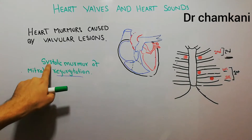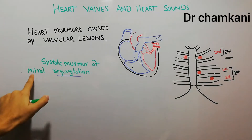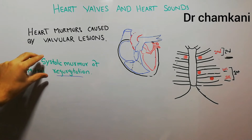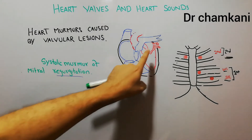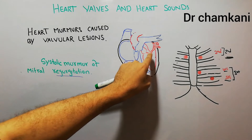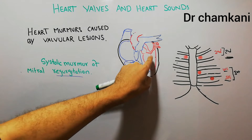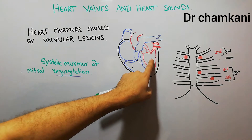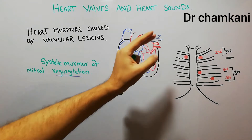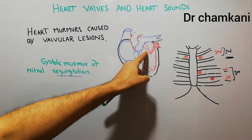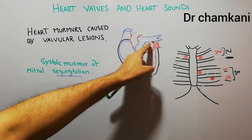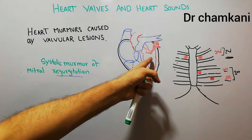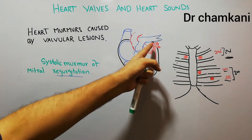Today we are going to talk about the systolic murmur of mitral regurgitation. What is basically mitral regurgitation? In mitral regurgitation, the mitral valve becomes incompetent and it allows the blood to move from the left ventricle into the left atrium. Normally, this valve allows the blood to move from left atrium into left ventricle only, but will not allow blood to move from left ventricle into the left atrium.